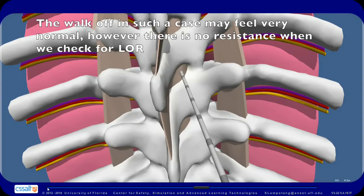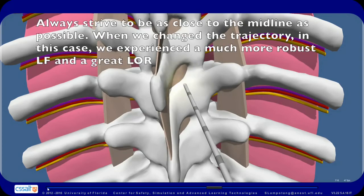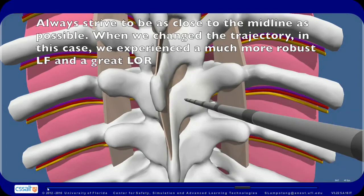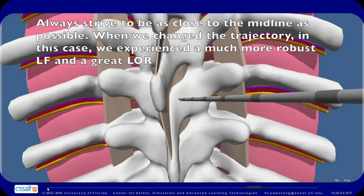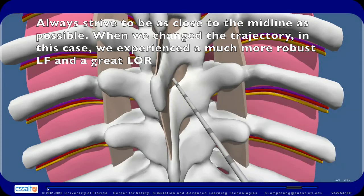The walk off in such a case may feel very normal; however, there is no resistance when we check for loss of resistance. Always strive to be as close to the midline as possible. When we change the trajectory, we experience a much more robust ligamentum flavum and a great loss of resistance.